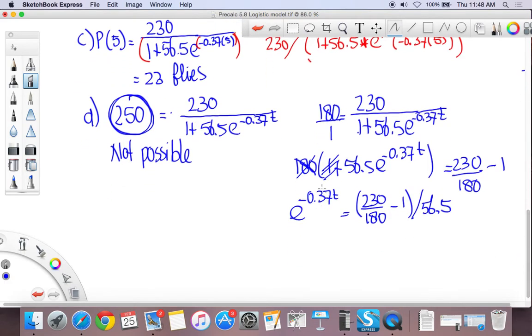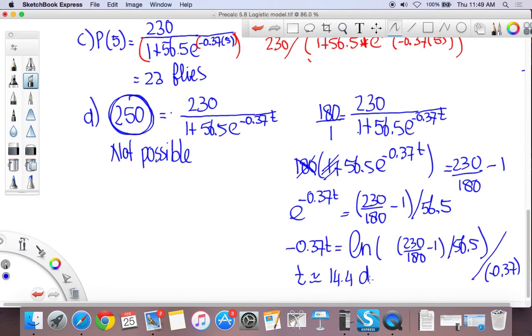To get the exponent down, you need to take a natural log on both sides. So then you get the natural log of (230/180 - 1)/56.5. And that would be -0.37t. And then you divide this mass by -0.37. If you solve this, you should get a time that is close to 14.4 days. I'm going to leave that up to you. If you struggle with that, that is something you need to work on a couple times and I'll help in class. If you come see me and we can figure out how to use the calculator on that. Okay, thank you.